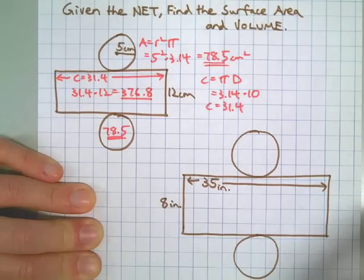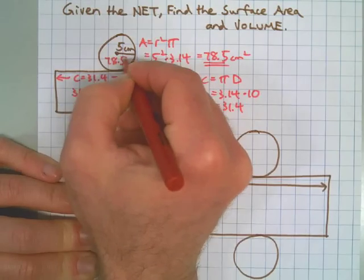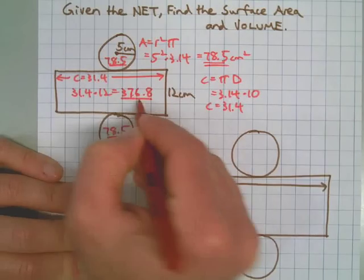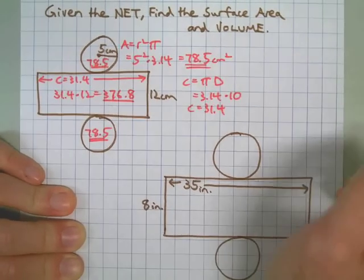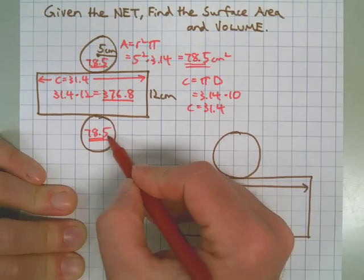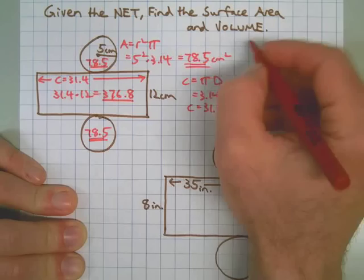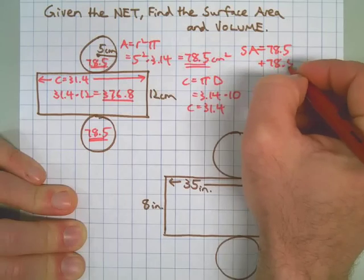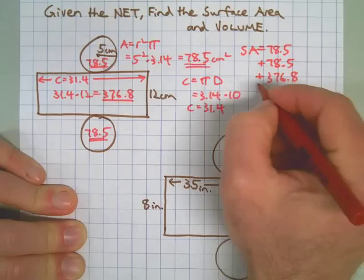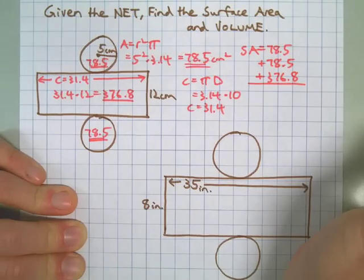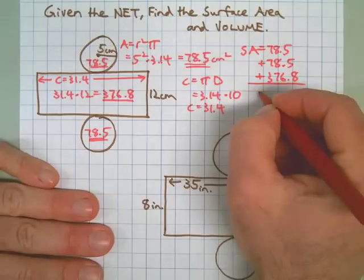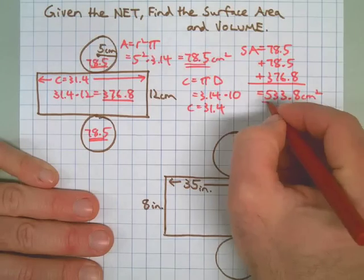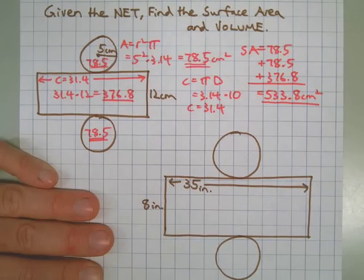Now we can find the area of the lateral face. I've got the three things I need to finish the surface area: the top and bottom bases — both congruent — and the lateral face. Let's add them up. For the surface area: 78.5 plus 78.5 plus 376 equals 533.8 square centimeters. That's our surface area.